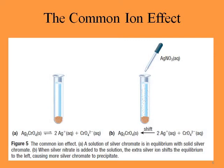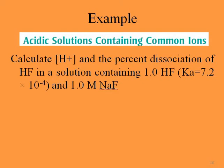The common ion effect doesn't occur only in solutions of substances with low solubility — even highly soluble substances also demonstrate the common ion effect. In summary, the common ion effect is a reduction in the solubility of an ionic compound due to the presence of a common ion in solution. Let's look at an example: acidic solutions containing common ions.